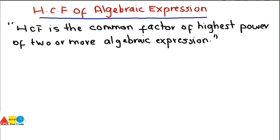As we are talking about algebraic expressions, we have to check how you can find the HCF of any expression that consists of variables and constants. So what is HCF? HCF is the common factor of highest power of two or more algebraic expressions.